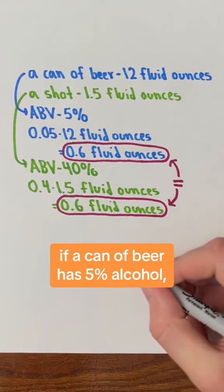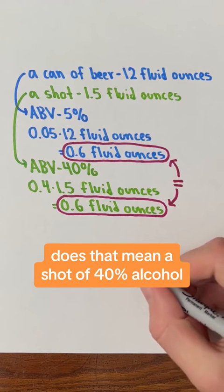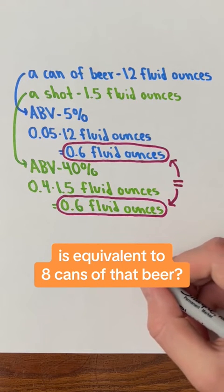You're asking, if a can of beer has 5% alcohol, does that mean a shot of 40% alcohol is equivalent to 8 cans of that beer?